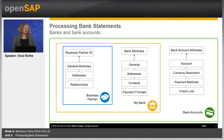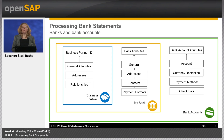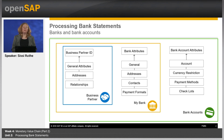The system assigns the role bank to the business partner. This role contains general attributes like bank name, bank ID, working day calendar, addresses, contacts, and allowed payment formats. For one bank you can define all related bank accounts. The bank account consists of a bank account number, an account determination group, currency restrictions, allowed payment methods, and further attributes.